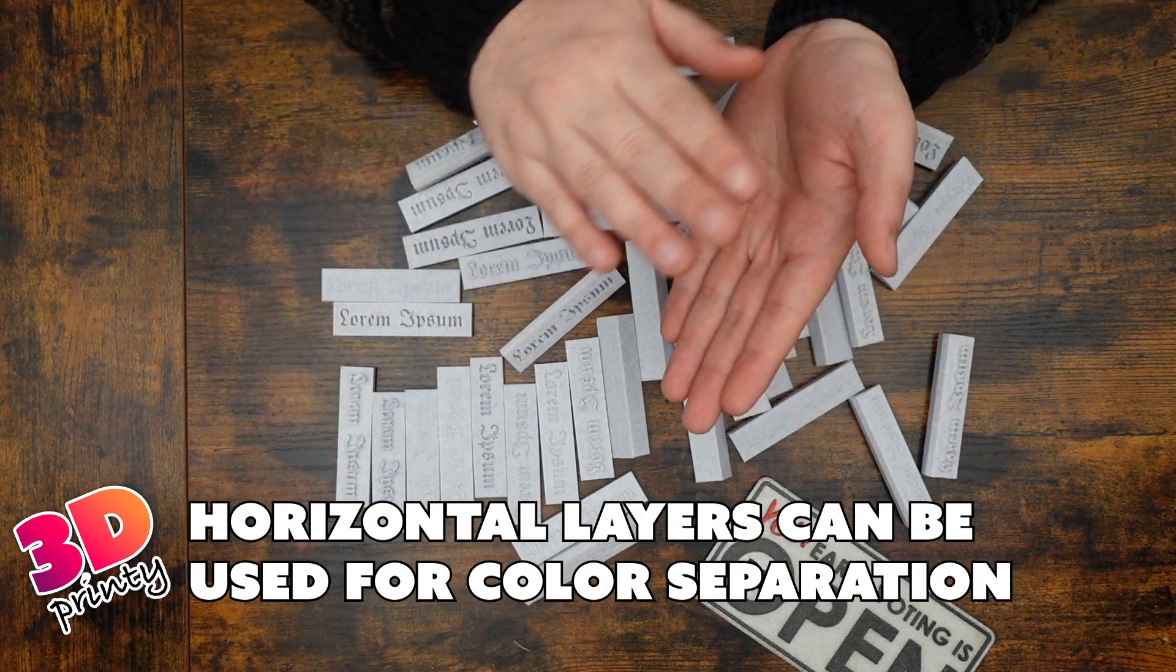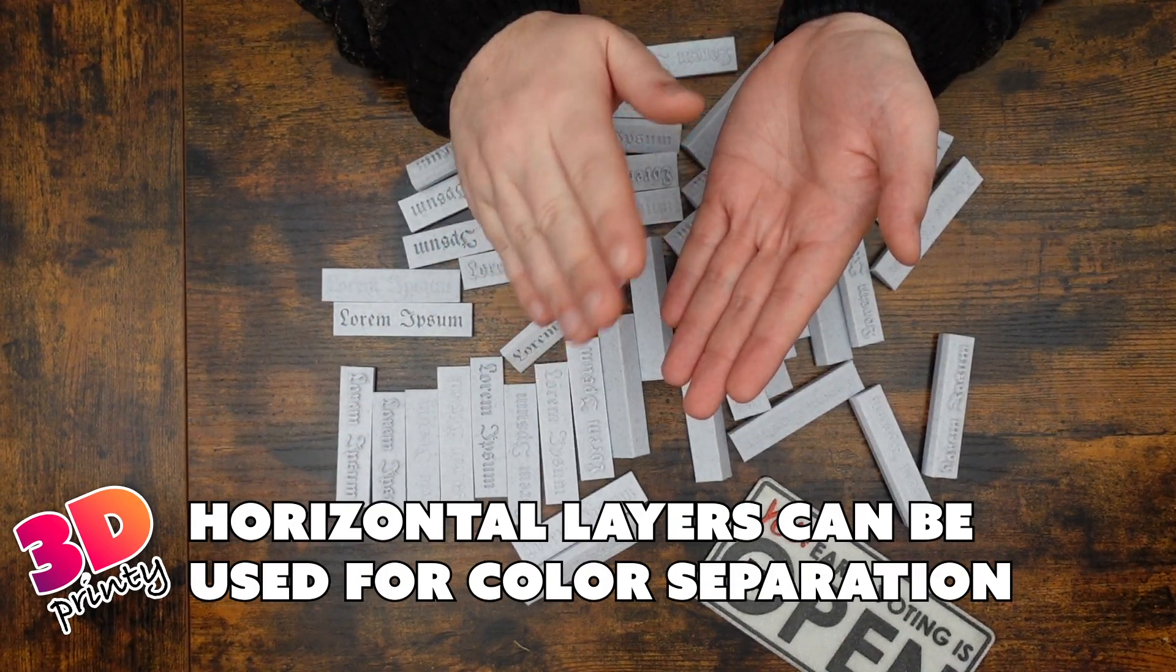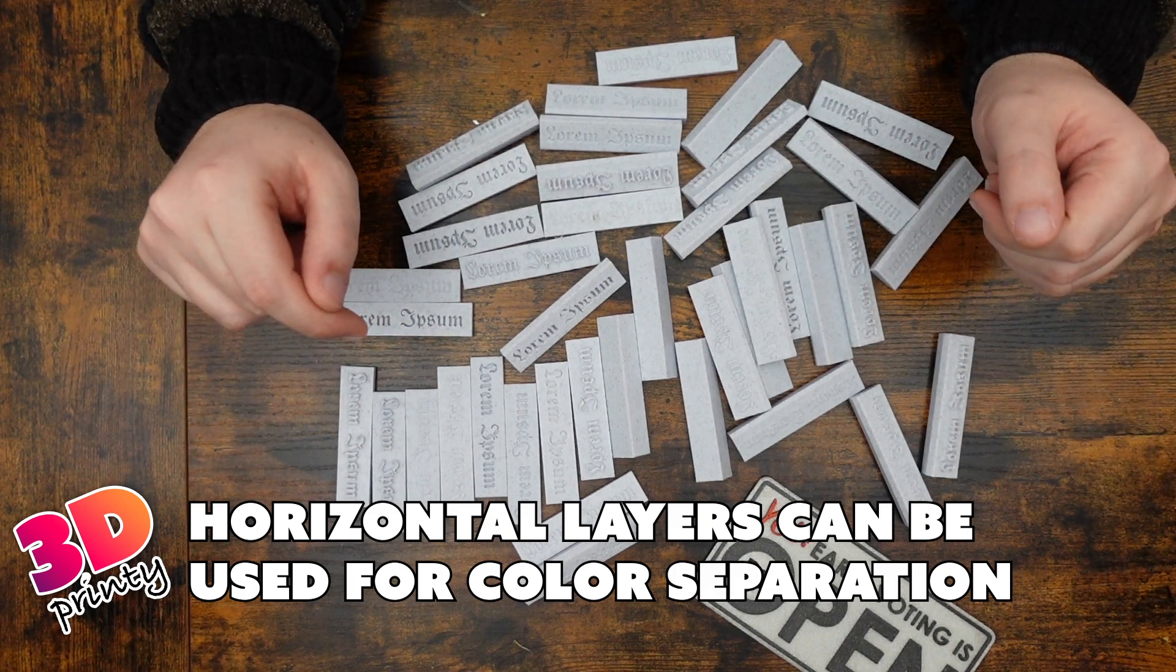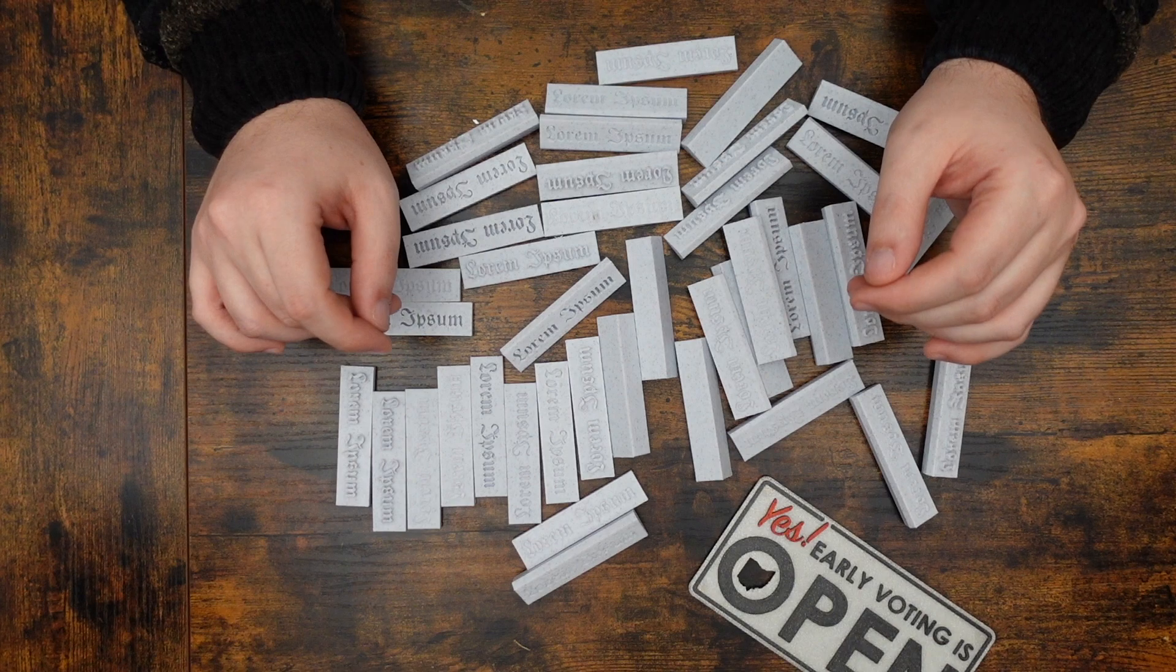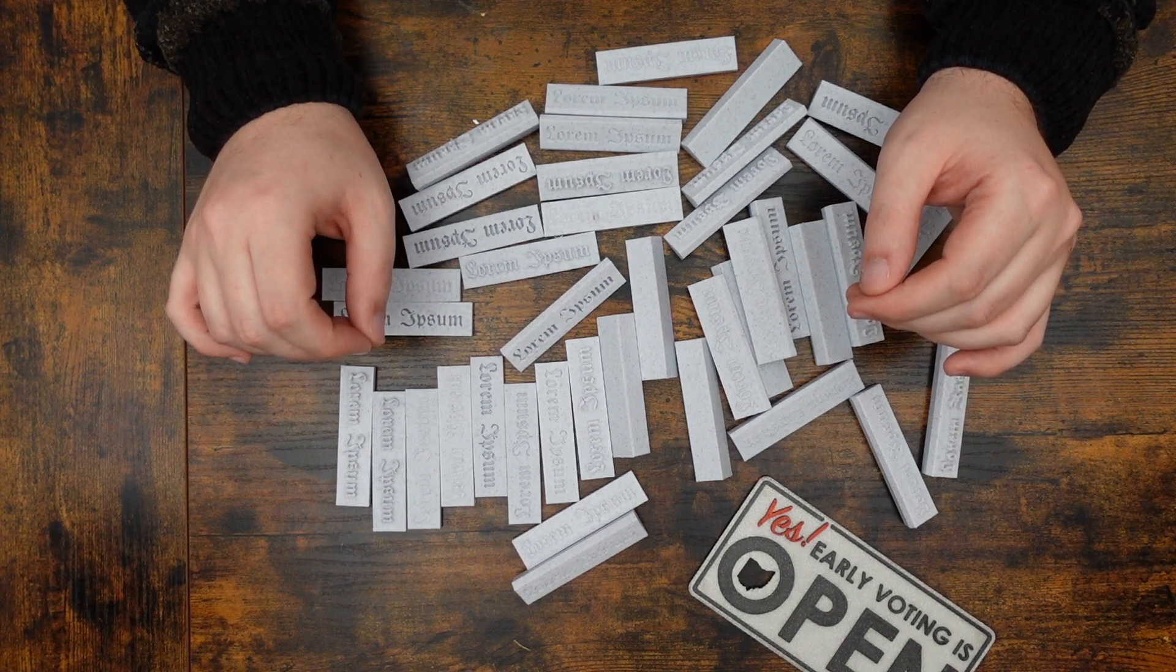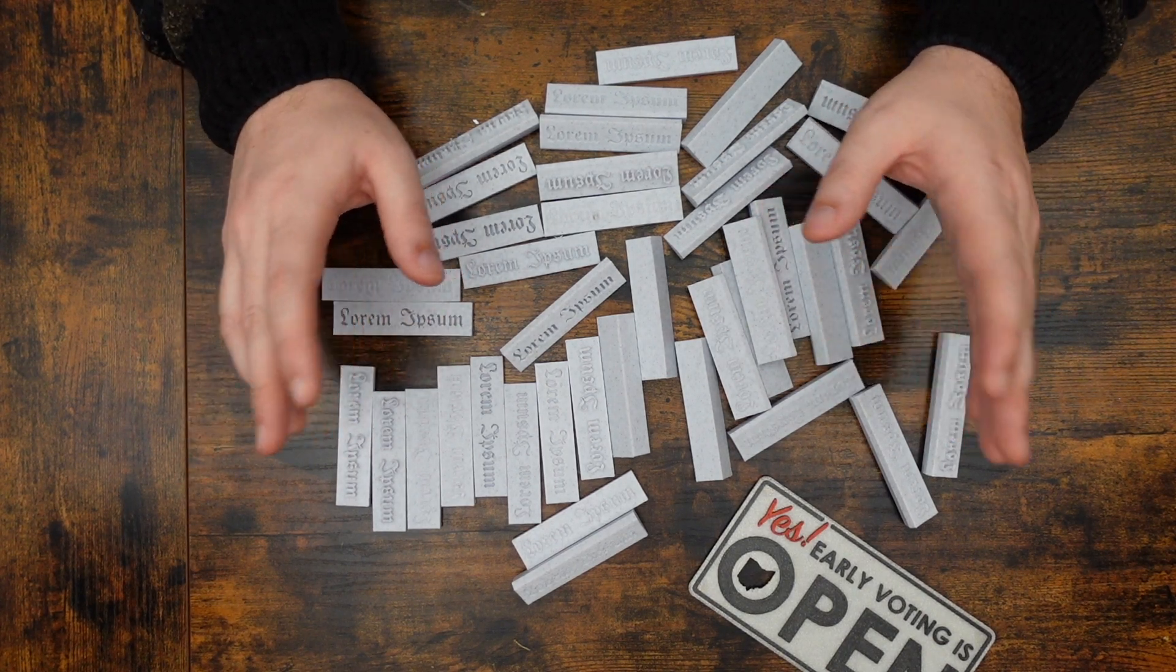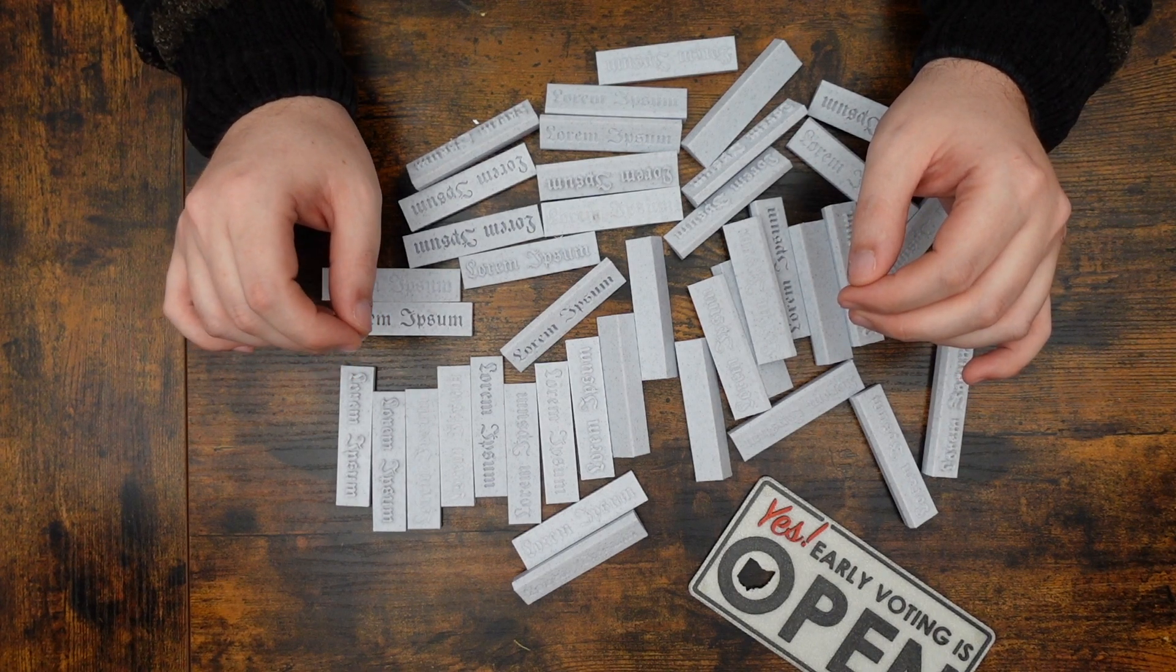Or are you using color separation per layer? Well, in that case, you pretty much can only print horizontally. While this video won't tell you exactly which technique to use in your next 3D print, hopefully it's given you the right questions to ask to find out.